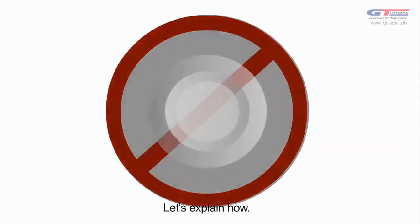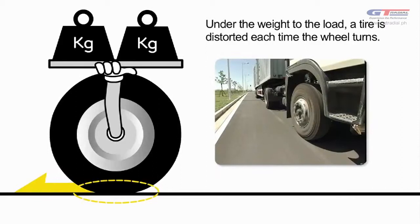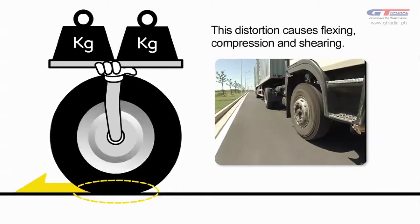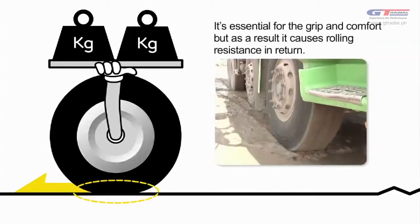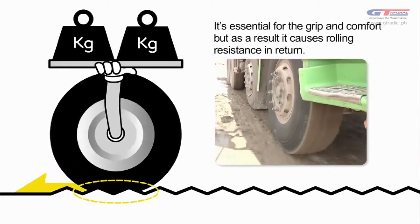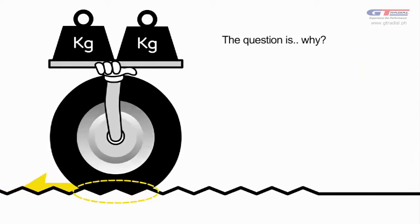Let's explain how. Under the weight of the load, a tire is distorted each time the wheel turns. This distortion causes flexing, compression, and shearing. It's essential for the grip and comfort, but as a result, it causes rolling resistance in return. The question is, why?